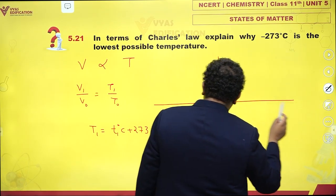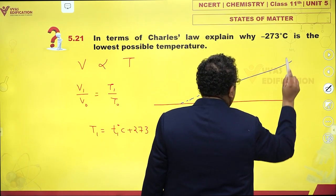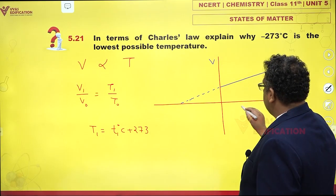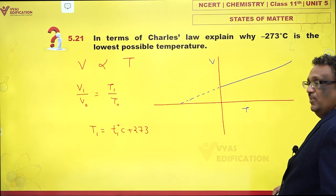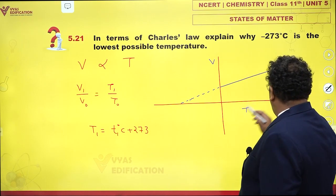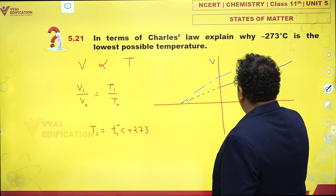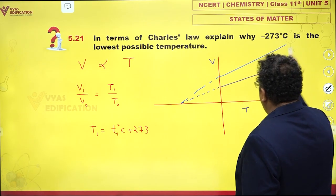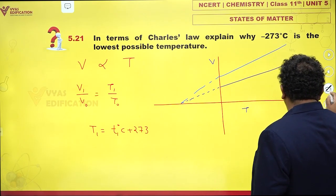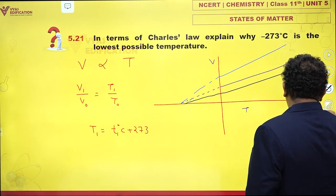You would discover that whenever volume versus temperature is being measured, and if you plot all of these graphs, you would discover that, first of all, these are lines of fixed slope. They will be obtained, very beautiful, like this.